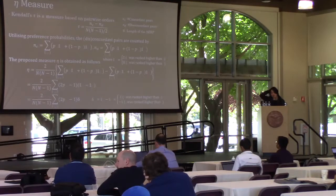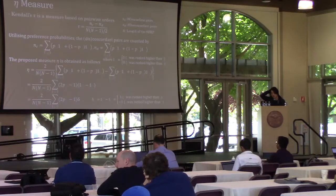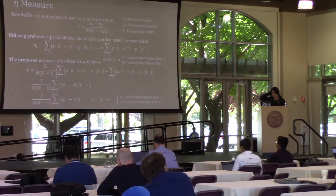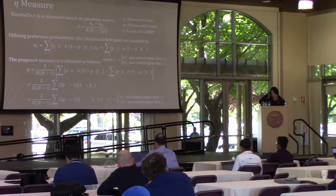Our proposal measure, eta, is based on Kendall's tau. Kendall's tau is a measure based on pairwise orders: the difference between the number of concordant pairs and that of discordant pairs divided by the total number of pairs.